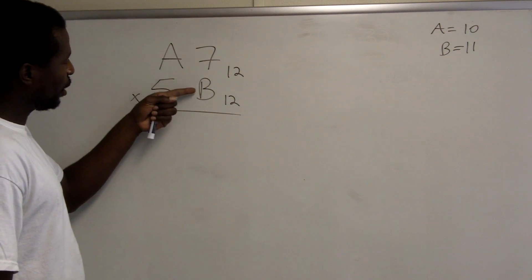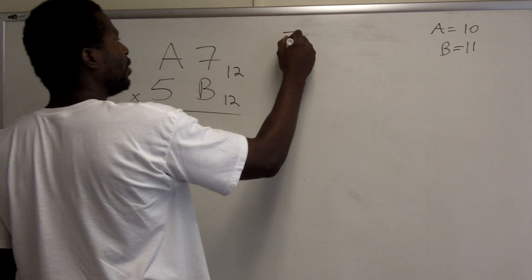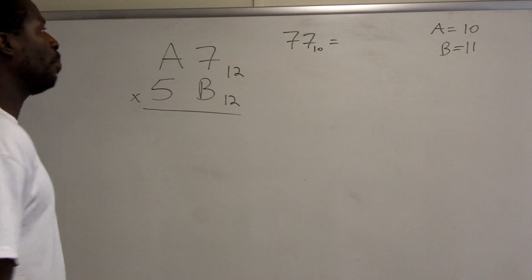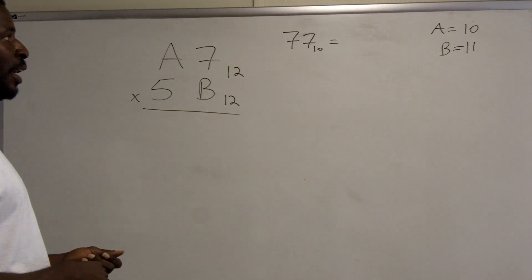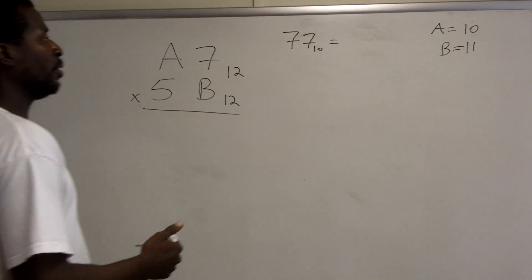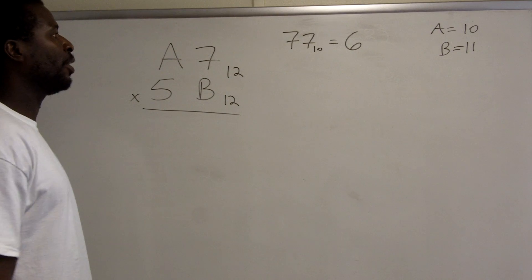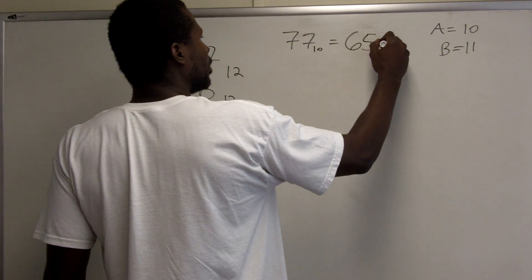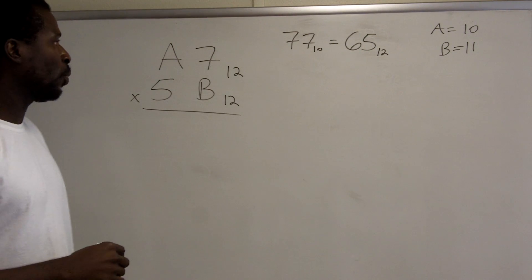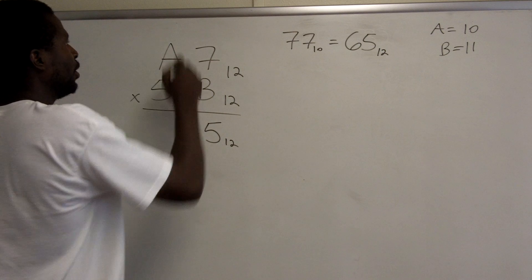When I multiply b — which represents 11 — by 7, I get 77 base 10. I need to convert that to base 12. How many groups of 12 are in 77? There are six groups of 12, and the remainder is 5. So 77 base 10 is 65 base 12. I record the 5 and carry the 6.